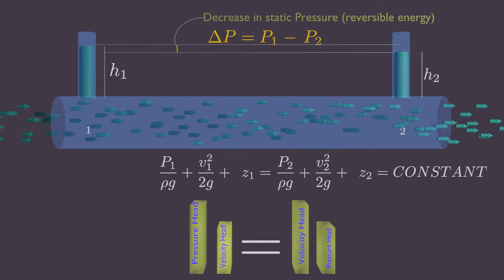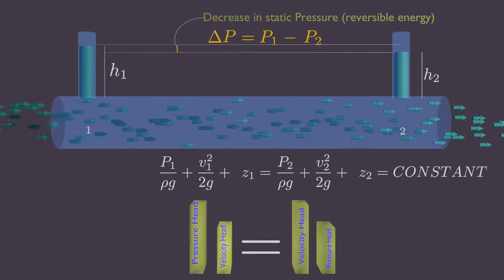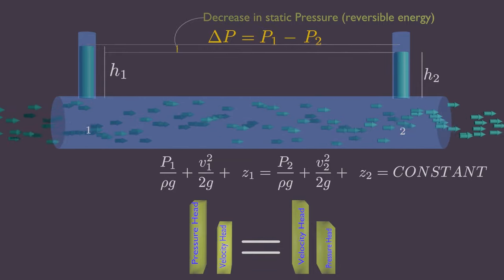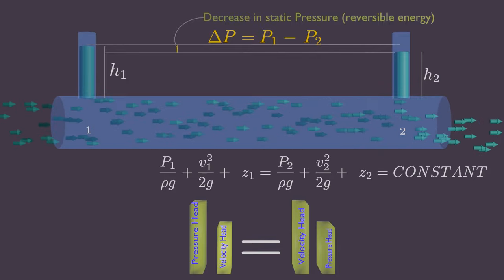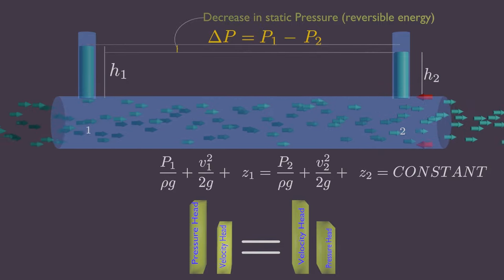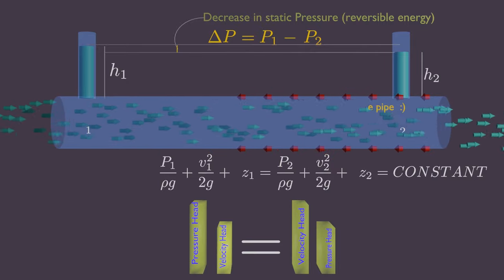This is reversible pressure drop without any irreversible losses. But in real life there exists irreversible pressure drop because there is always presence of friction and heat.